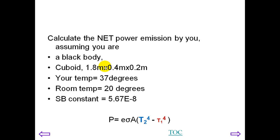We have a question for you. Calculate the net power that you emit in the room. Let's assume that you're a black body, a cuboid of height 1.8 meters, width 0.4 meters, and thickness 0.2 meters. Let's say your temperature is 37 degrees. Your surrounding temperature in the room is 20 degrees. Because you're warmer than the surrounding, you are radiating more energy than you absorb from the surroundings. You can find out your net contribution to the power in the room.